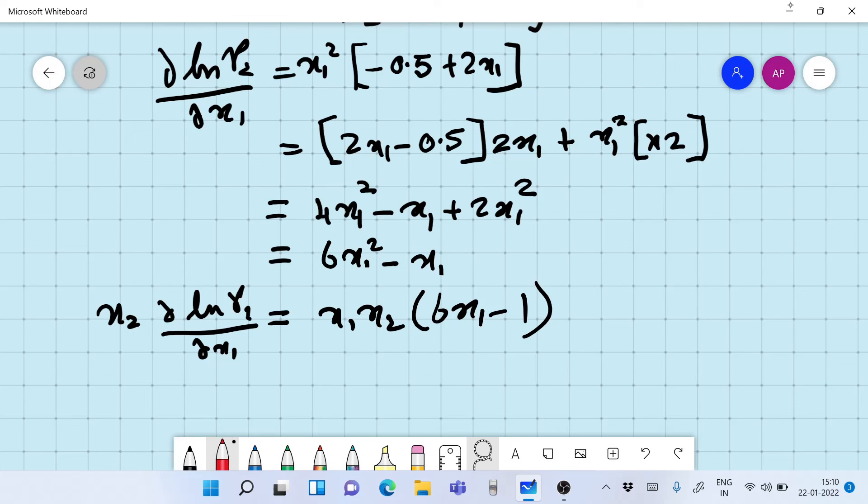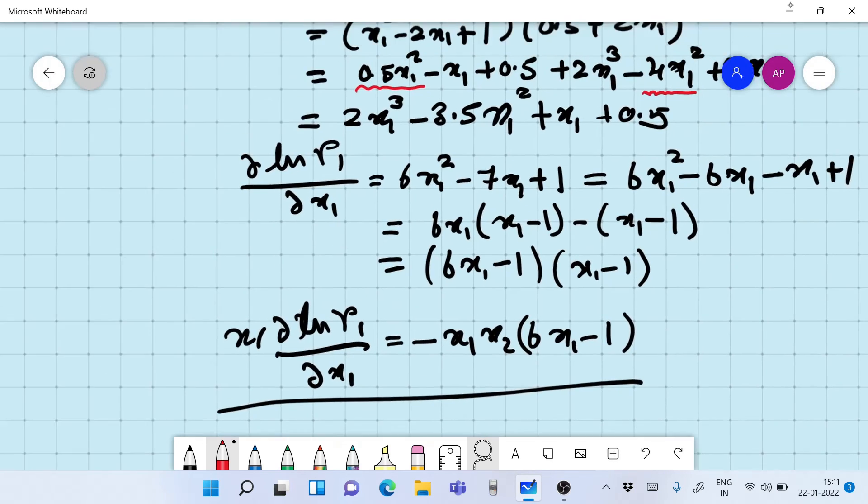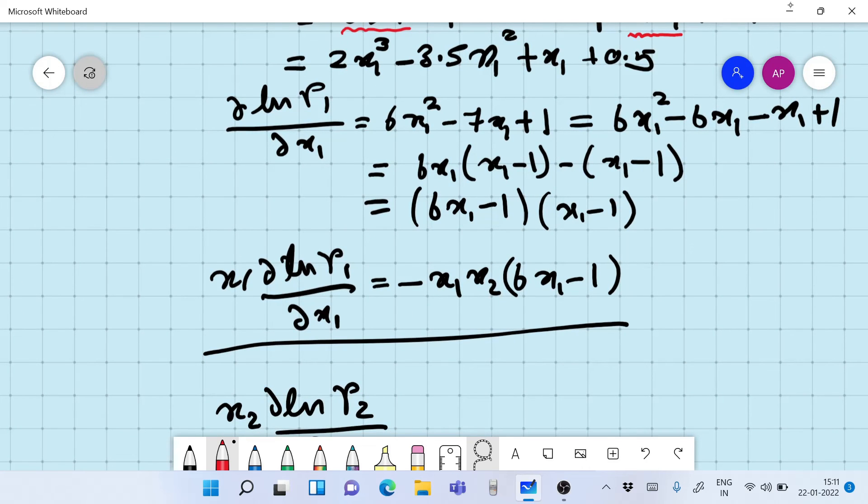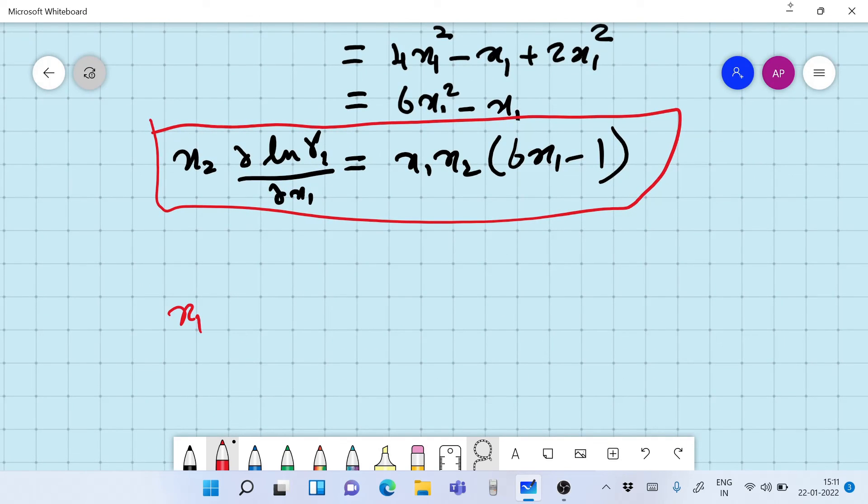And if you multiply it by x2, x2 d ln gamma 2 by dx1 is going to be equal to now x1 x2 times 6x1 minus 1. As we can see here, the second differential is this, and the first differential as we can see is the exact opposite.